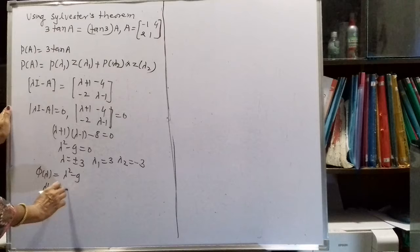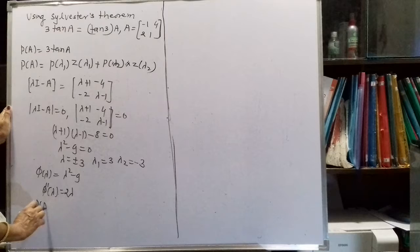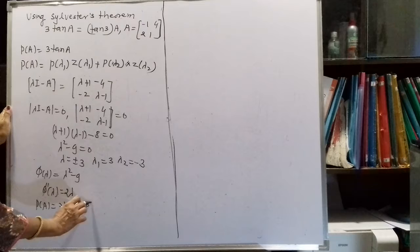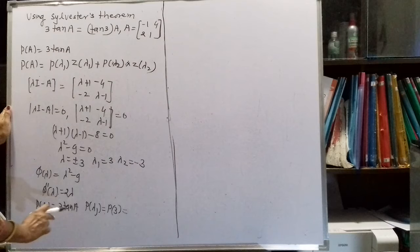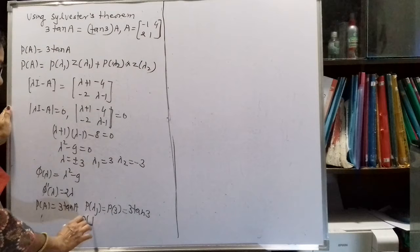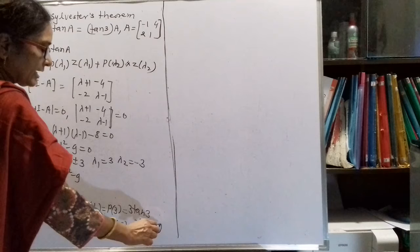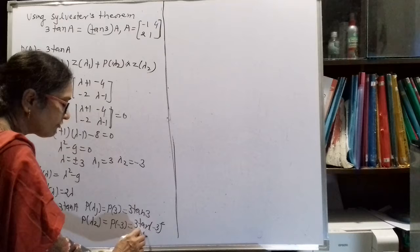With λ₁ = 3 and λ₂ = −3, we compute P(λ₁) and P(λ₂). Since P(A) = 3·tan(A), we get P(λ₁) = 3·tan(3). Then P(λ₂) = 3·tan(−3) = −3·tan(3), since tangent is an odd function.